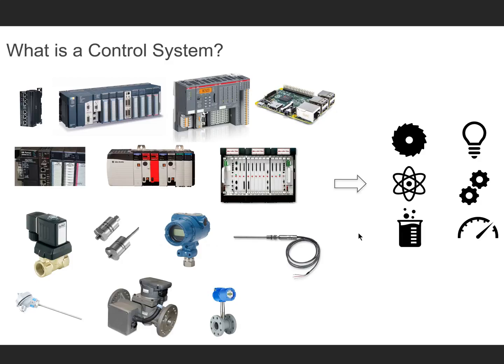The end goal of the control system is to produce the desired output. The output could be the torque to drive a mechanical device, produce a chemical, or generate electricity — or even turn on the lights in your house when you walk in the door.